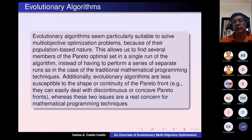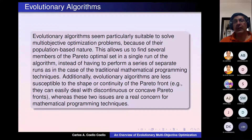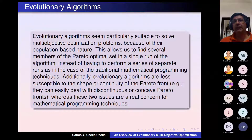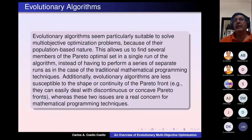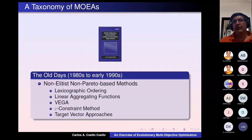Evolutionary algorithms are particularly suitable for multi-objective optimization for several reasons. The main one is that evolutionary algorithms operate on a set of solutions, not one at a time as with mathematical programming techniques. Because of that, if we properly manipulate the population, it should be possible to generate several elements of the Pareto optimal set in a single execution of the algorithm—something not possible with mathematical programming techniques. The other advantage is that evolutionary algorithms are much more general and less susceptible to the shape and continuity of the Pareto front.